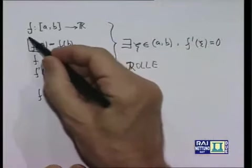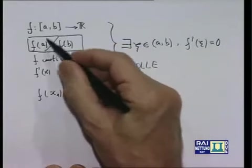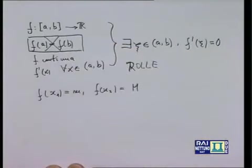Naturalmente è chiaro che se lascio cadere l'ipotesi che f(a) sia uguale a f(b), la tesi cade. Pensiamo alla funzione f(x) = x, oppure f(x) = mx + q con m diverso da zero: funzione continua su un qualsiasi intervallo compatto, la derivata prima è costante, ma non ci sono certamente punti di annullamento della derivata prima. Vediamo cosa ci può suggerire un'idea su come estendere questo teorema.